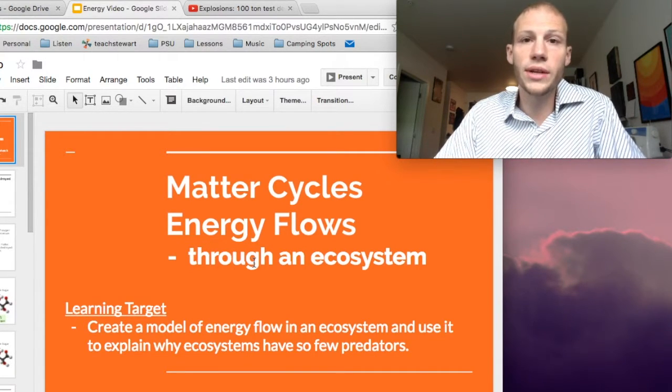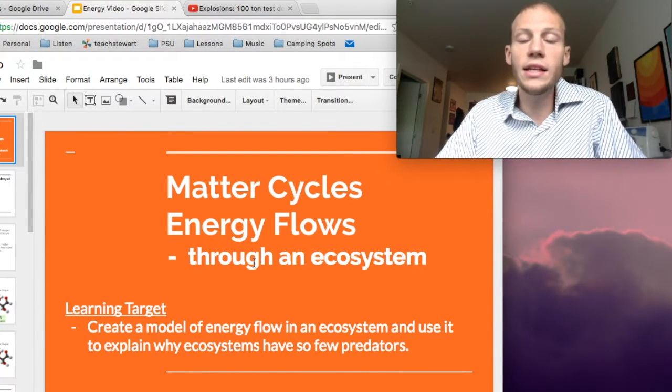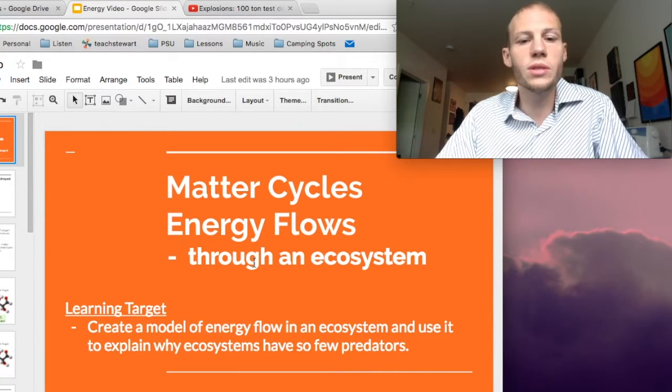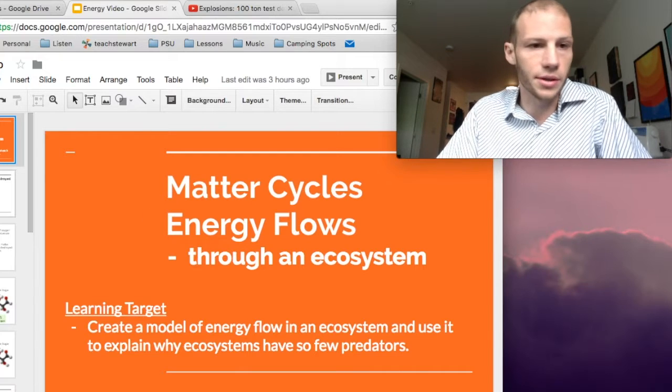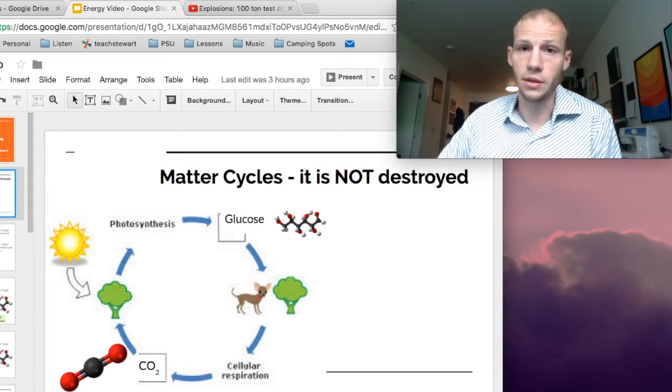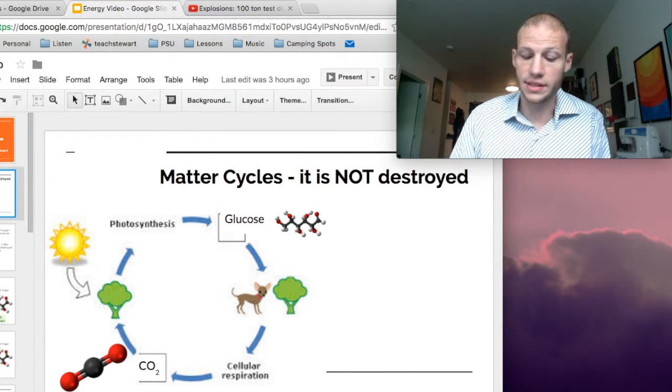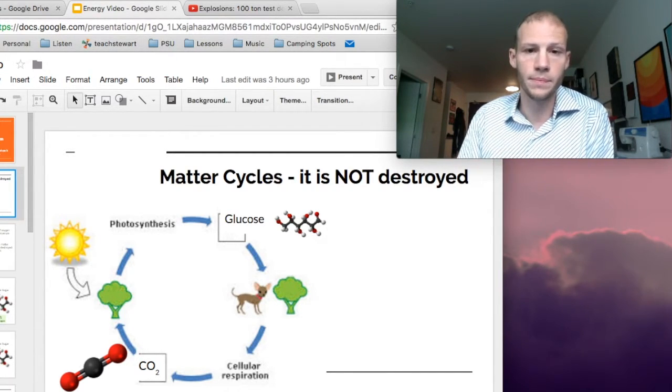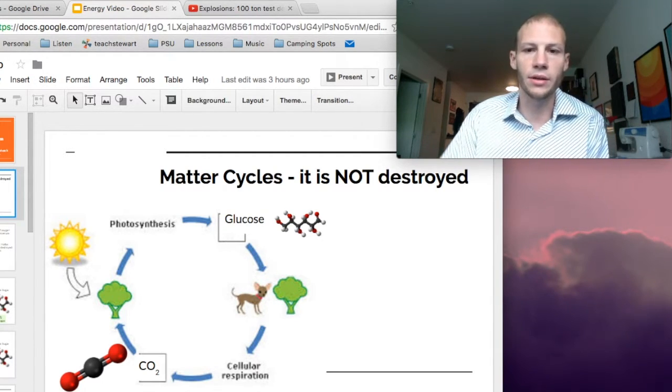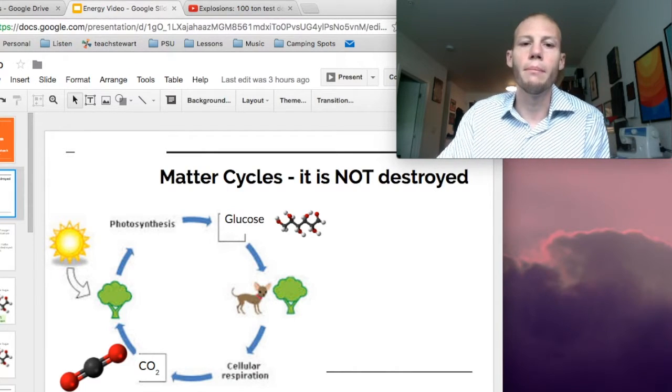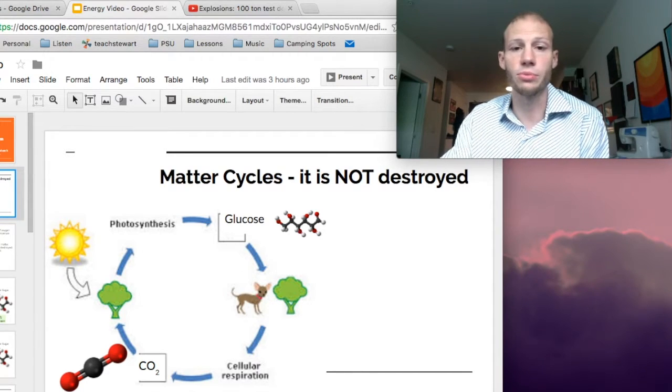Coming up this week, you guys are going to be creating a model of energy flow in an ecosystem and use it to explain why ecosystems have so few predators. So let's go ahead and get started. If you're watching this on Monday or Tuesday, which hopefully you are, then in class we will have just finished up our lesson on the cycling of matter. The important things to remember in the cycle of matter is that matter is never destroyed. Matter always stays in an ecosystem and cycles through various molecules.